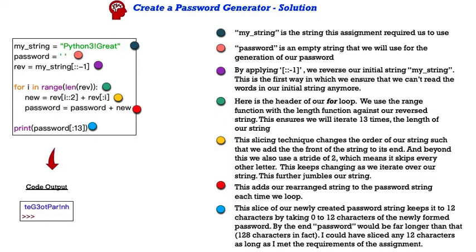Then next, we have our header in this greenish dot. We use the range function with the length function against our reversed string. This ensures we'll iterate 13 times the full length of our string. Next, I use a slicing technique that changes the order of our string such that we add the front of the string to its end. And beyond this, we also are using a stride of 2, which means it skips every other letter. This keeps changing as we iterate over our string.